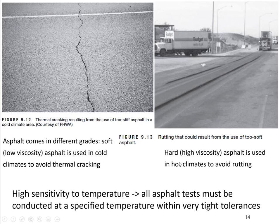On the other hand, hard asphalt with high viscosity should be used in hot climates to avoid rutting. This figure shows rutting resulting from the use of too soft asphalt in a hot climate area. Due to its temperature sensitivity, asphalt should be selected according to the climate of the area. The viscosity of the asphalt should be mostly within the optimum range for the area's annual temperature range — soft asphalt for cold climates and hard grade asphalt for hot climates.